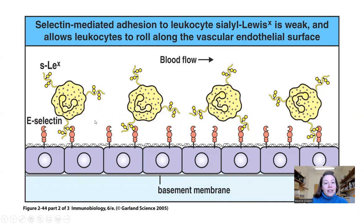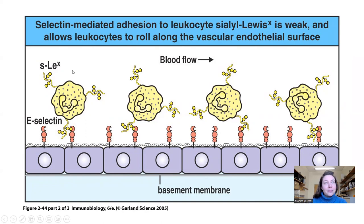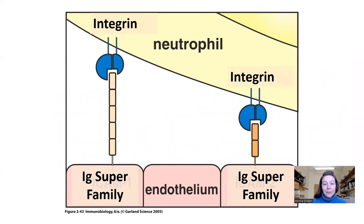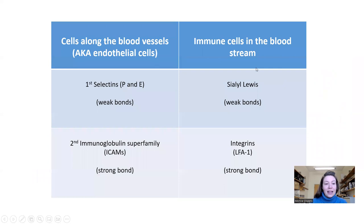So the migration has a couple of steps — it's a little bit like stop, drop, and roll. There are two types of binding: gentle binding and strong binding.